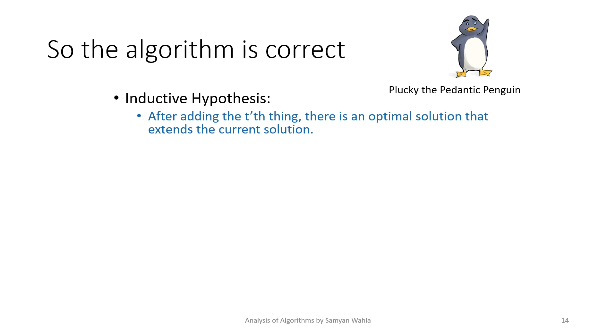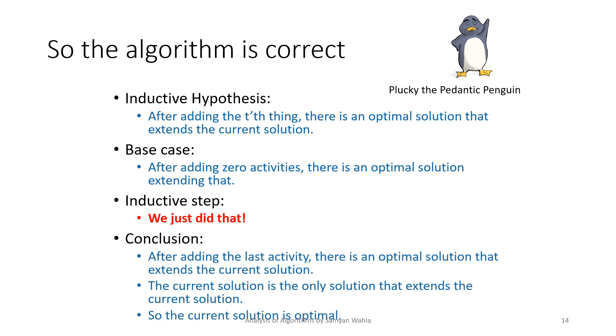Whenever you have to prove an algorithm's correctness, we need to take an inductive hypothesis, which contains a base case, an inductive step, and a conclusion. Base case: we have picked a choice, we have picked an activity, and then there is an optimal solution.